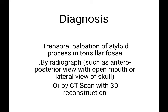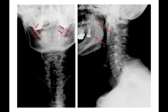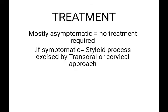Diagnosis is made by transoral palpation of the styloid process in the tonsillar fossa, by radiograph such as anteroposterior view with open mouth or lateral view of the skull, or by CT scan with 3D reconstruction. Here is the diagram in which the red line represents the elongated styloid process.